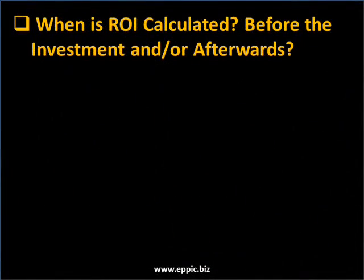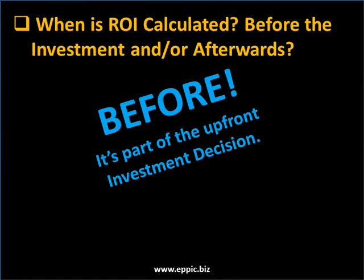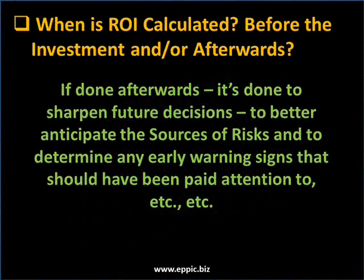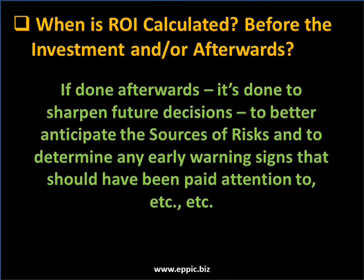When is ROI calculated — before the investment and/or afterwards? Before: it's part of the upfront investment decision making — should we go with Opportunities 1 and 2, or just with 3? If it's done afterwards, it's done to sharpen future decisions, not to prove or disprove a prior decision, which is gotcha management by people uninformed about what ROI is and isn't. If done afterwards, it's done to sharpen future decisions, to better anticipate the sources of risk, and to determine if there were any early warning signs that could have, should have been paid attention to.